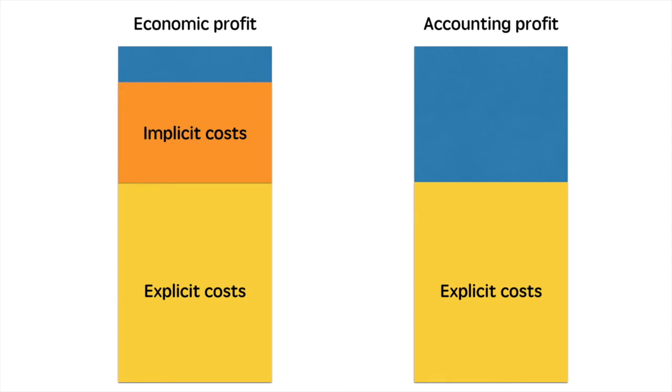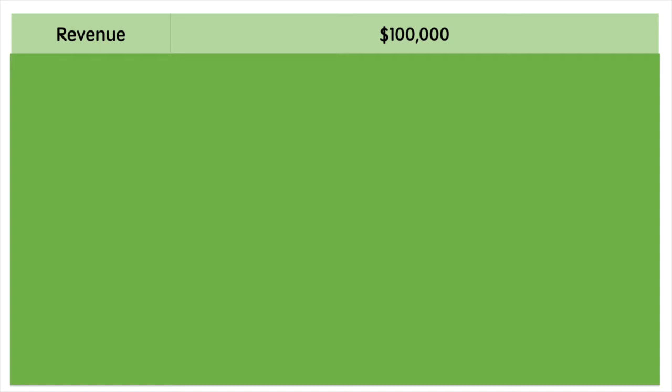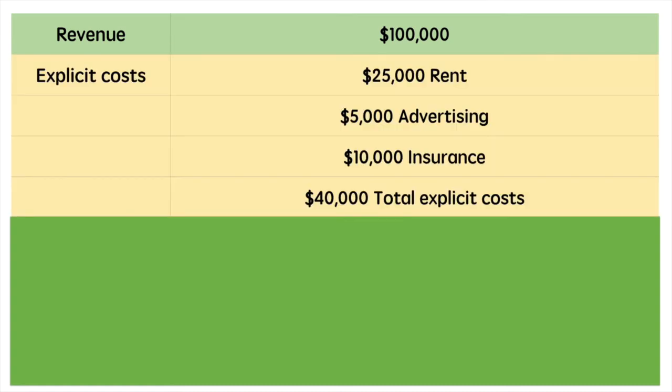Let me explain with a numerical example. Suppose Sam starts a company that earns her $100,000 in revenue. In order to calculate Sam's accounting and economic profit, I need to subtract her explicit costs, which include things like rent, advertising and insurance. Explicit costs are costs incurred by the firm for the use of resources it does not own.